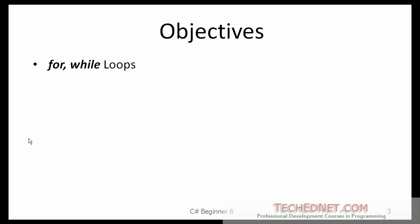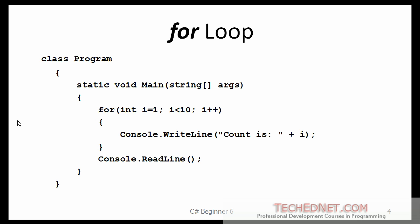The objectives of this lesson are to learn about FOR and WHILE loops. The FOR statement provides a compact way to iterate over a range of values. It is often referred to as the FOR loop because of the way in which it repeatedly loops until a particular condition is reached.